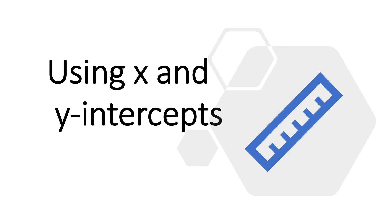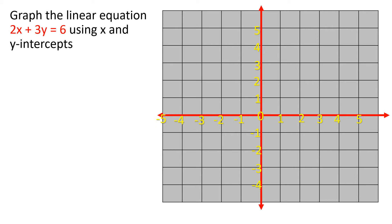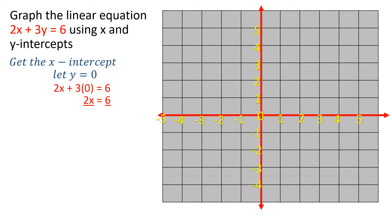Next is graphing a linear equation using the x and y-intercept. You're asked to graph 2x + 3y = 6 using the x and y-intercept. First, let us get the x-intercept by letting y = 0. The equation becomes 2x + 3(0) = 6. Since 3 times 0 is 0, we have 2x = 6. Dividing both sides by 2, x = 3. Thus, the x-intercept is (3, 0).